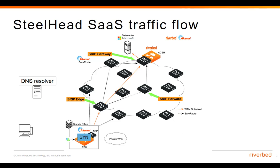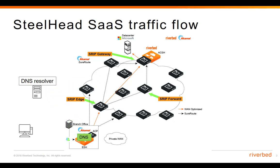Before sending this SYN packet to the server, the client-side Steelhead will create a UDP tunnel with Akamai. It's important to know that all the Steelhead SaaS traffic between the client-side Steelhead and Akamai will be sent through this UDP tunnel. To create this tunnel, the Steelhead will send a special DNS request, which will be forwarded from the local DNS resolver to Akamai. With this response, the Steelhead will use the returned IP address to create the tunnel.